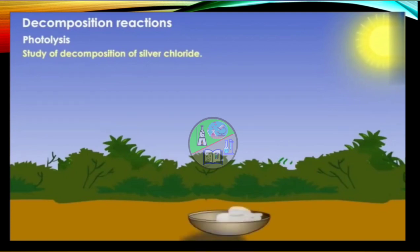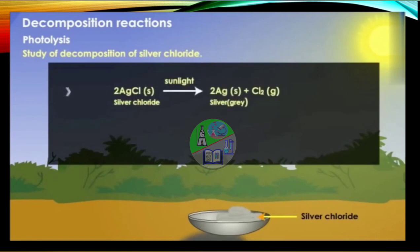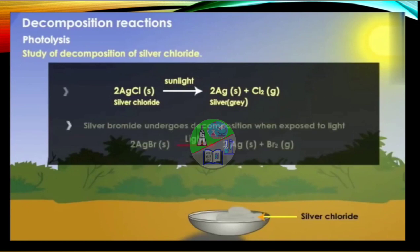Let's see the decomposition of silver chloride. Take about 2 grams of silver chloride in a china dish and place this dish in sunlight for some time. It is observed that the white silver chloride turns grey on exposure to sunlight — so silver chloride on exposure to sunlight produces silver and chlorine gas. Similarly, silver bromide also undergoes decomposition when exposed to light, producing silver and bromine gas.